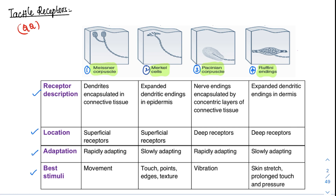Two of the receptors are encapsulated — surrounded by a membrane. Meissner's corpuscles are dendrites encapsulated in connective tissue, and Pacinian corpuscles are nerve endings encapsulated by concentric layers, giving an onion peel appearance. The remaining two — Merkel's cells and Ruffini endings — are not encapsulated; they are free dendritic endings.